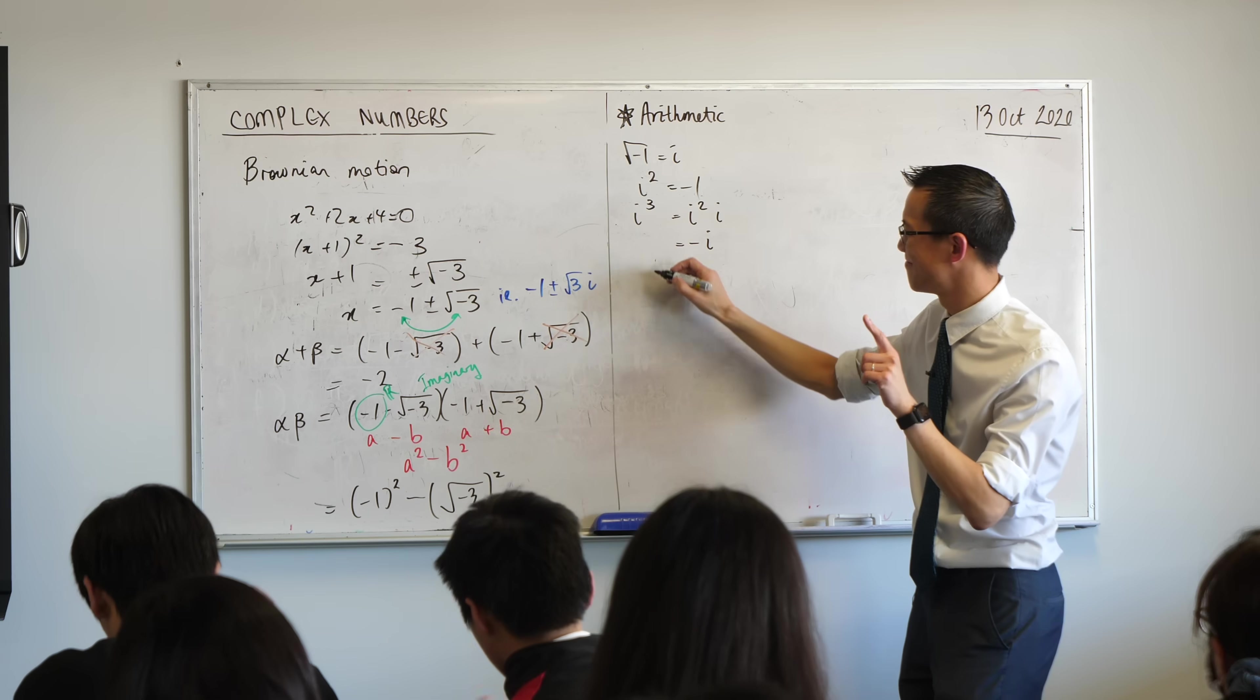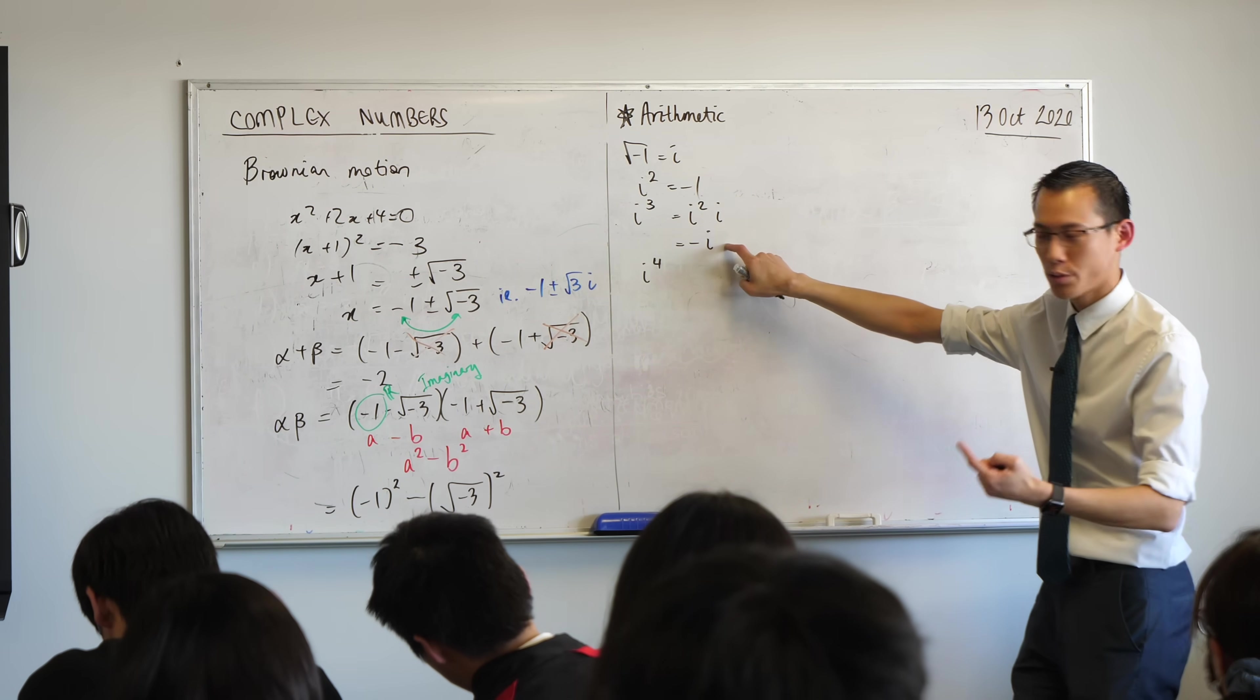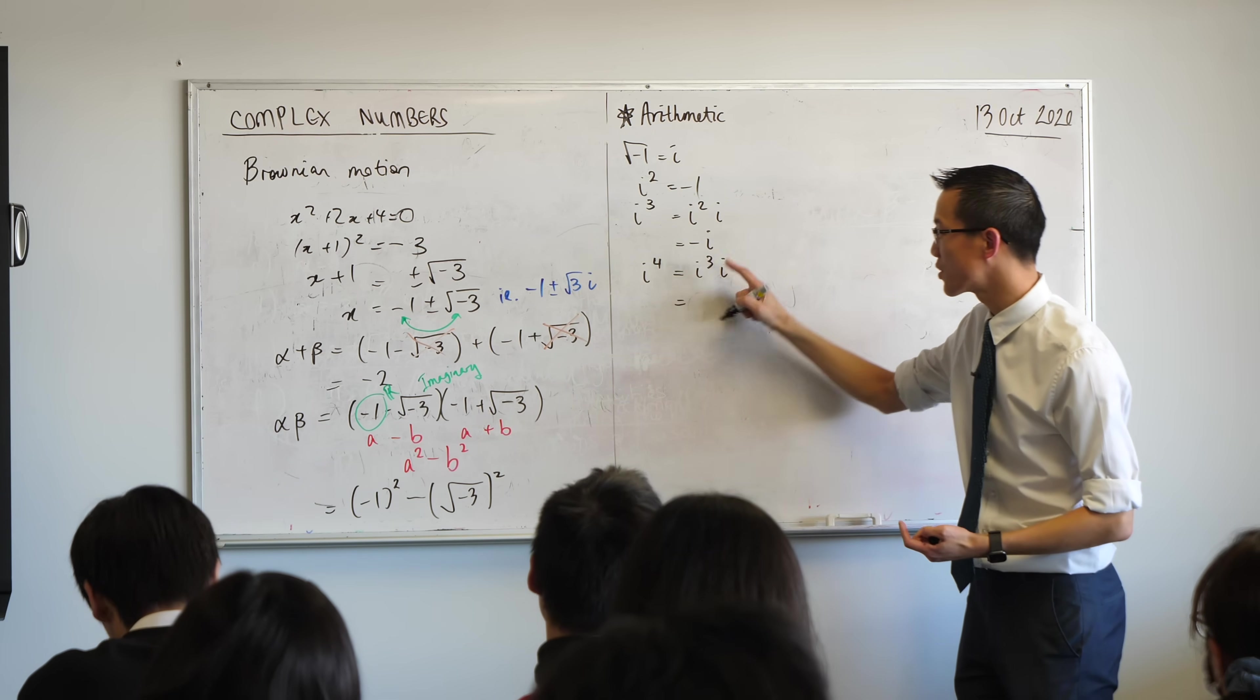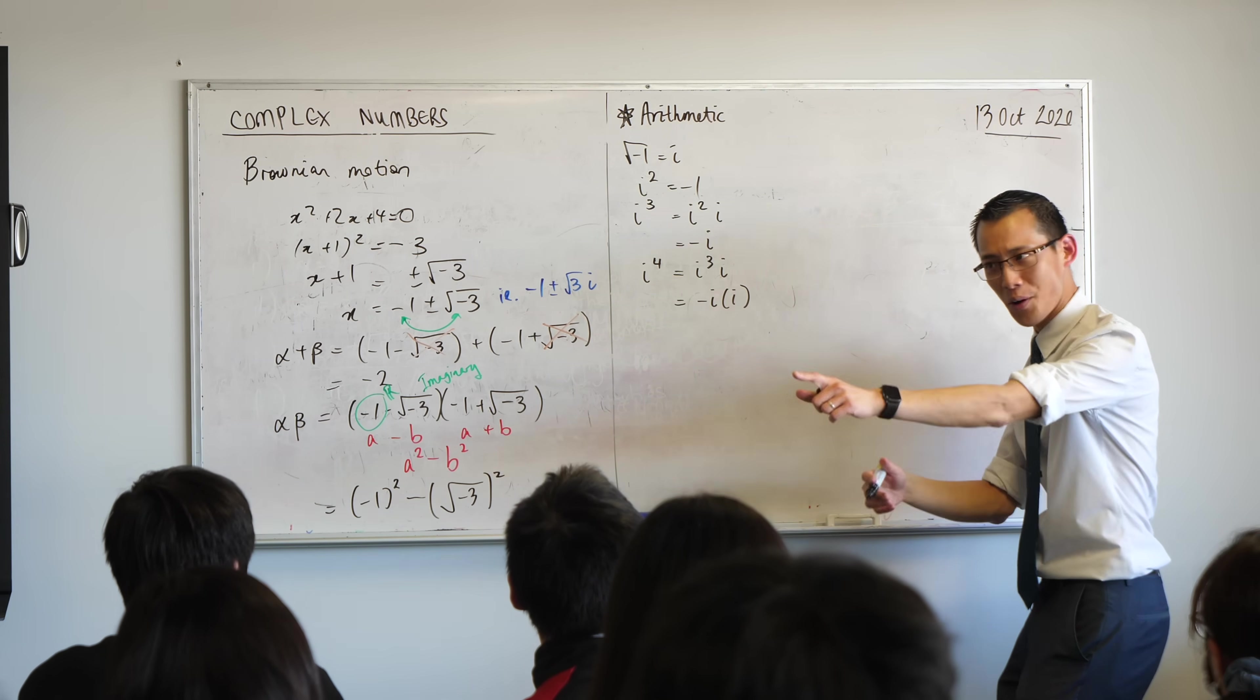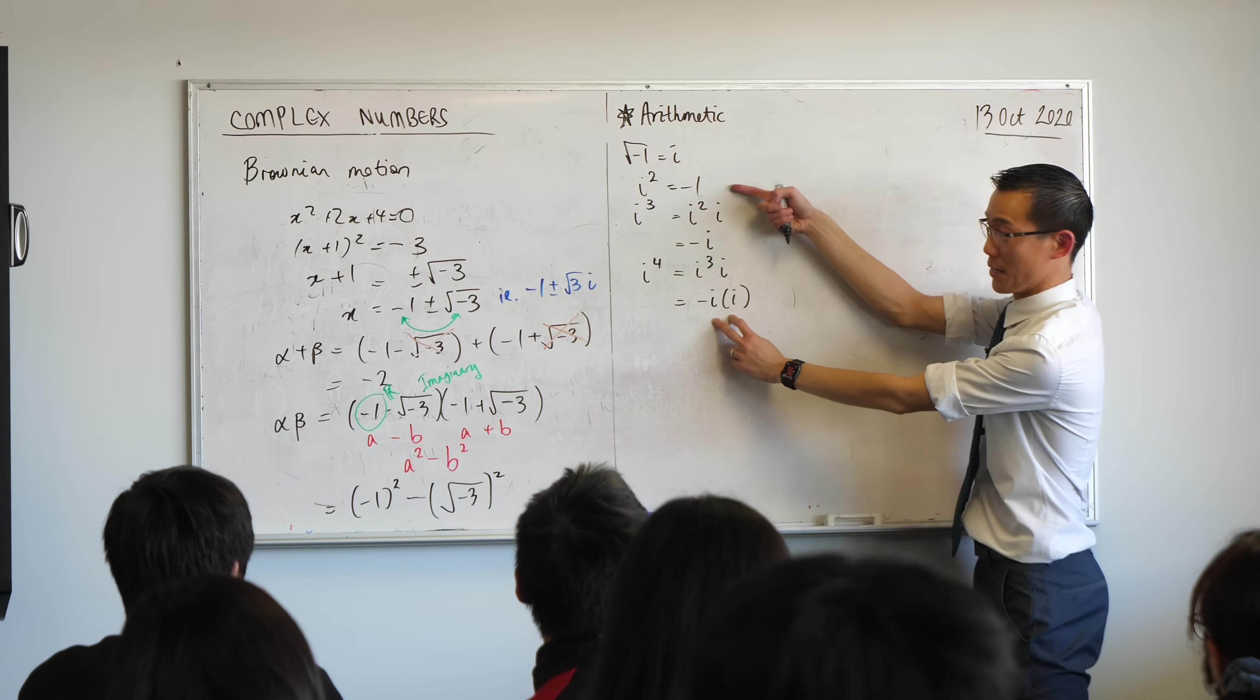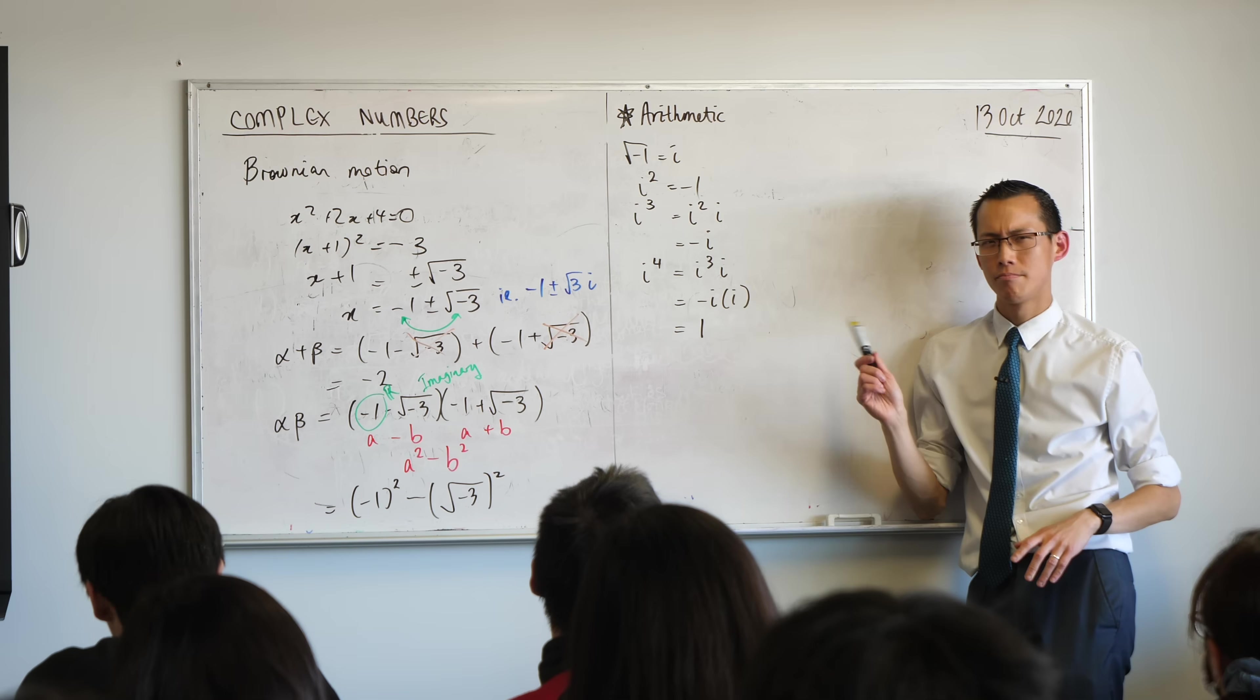I'm just going to do this one more time. If I multiply by i a fourth time, you're taking this and multiplying by i. So this is i cubed times i. We just established that that's minus i times i. So what does this become? One. Yeah, it's one because you've got a negative one here, and then these guys become negative one. Negative one times negative one, one. Hmm. Weird, that.